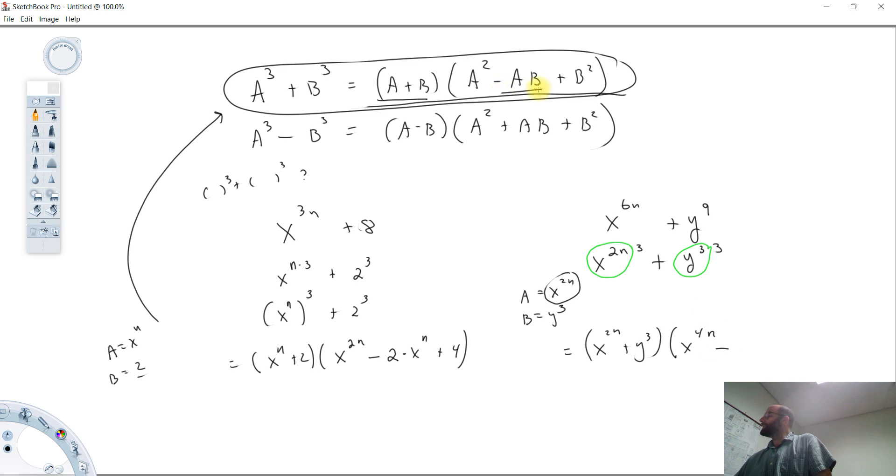Minus, this term, a times b would be minus x to the 2n, y to the 3rd. Then the last term plus b squared.